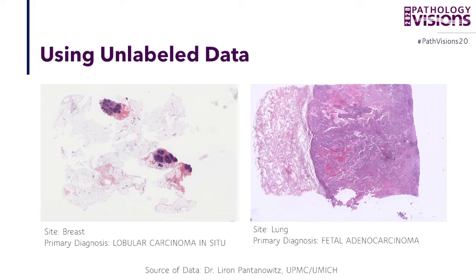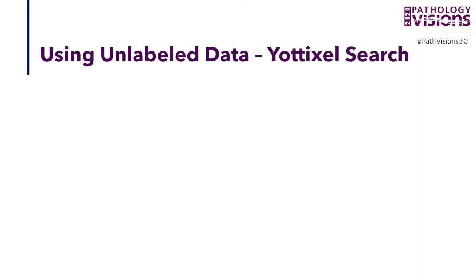The problem is that if you look at a publicly available dataset like TCGA, the data is unlabeled. When I look at a lobular carcinoma or adenocarcinoma, I have the primary site and the primary diagnosis, but I don't know exactly where the carcinoma is in the image. The data is not delineated, so it cannot be used for any type of supervised learning.